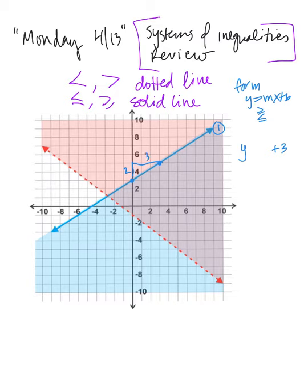It's rise over run, so it's two-thirds x. And the shading is below, so that means that y is less than. Y is less than two-thirds x plus three because the shading is below.